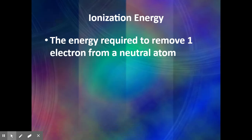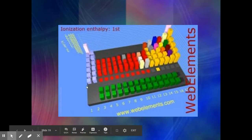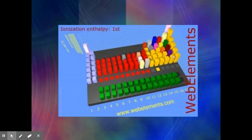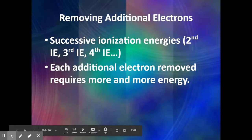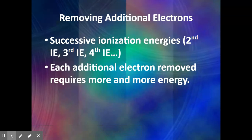Ionization energy is the energy required to remove one electron from a neutral atom. For atoms close to having 8 electrons, this is very difficult because they don't want to give those up. For others, it's easy because they want to get rid of that one electron to have 8 in the lower shell. The trend is somewhat staggered — it requires more energy on the right side of the table, and less on the left. Successive ionization energies — second, third, fourth — require more and more energy each time.